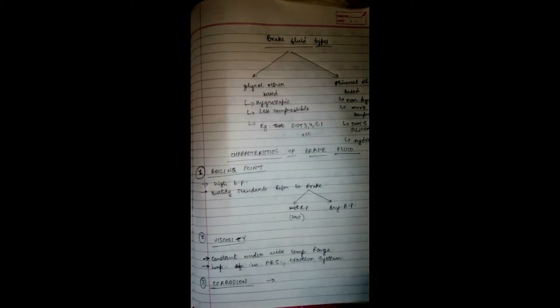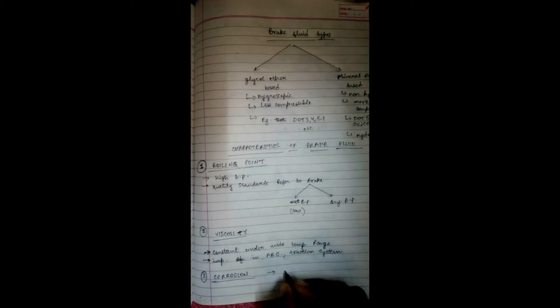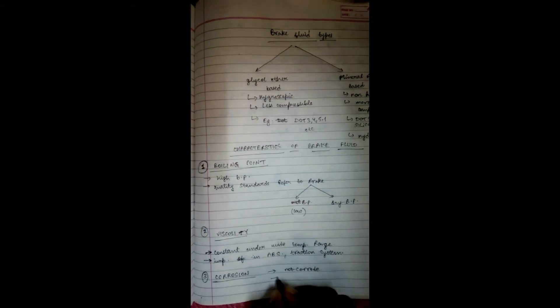The third characteristic is corrosion. Your brake fluid must not corrode metallic parts or components like calipers and wheel cylinders. There are some additives — corrosion inhibitors — which are added to the brake fluid to inhibit corrosion. Additionally, silicon-based fluids are less corrosive.